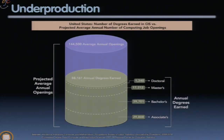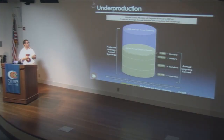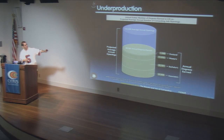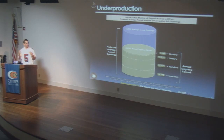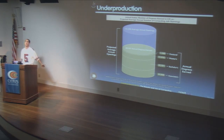On underproduction: this slide from NCWIT shows projected annual openings — 144,000 — but only 88,000 annual degrees being earned, counting doctoral, master's, bachelor's, and associate's degrees. These are US-only numbers. We are not filling our own demand. Google, Microsoft, and others are going internationally and trying to increase visas to bring in talent to fill that gap.